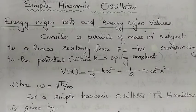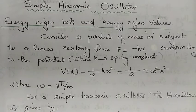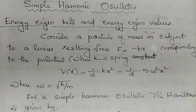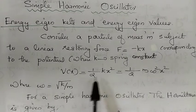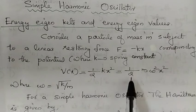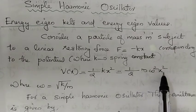Simple harmonic oscillator. It is an important topic in this chapter. In the first part we derive the energy eigenkets and the energy eigenvalues for a simple harmonic oscillator. Consider a particle of mass m subject to a linear restoring force f equal to minus kx, corresponding to the potential V of x equal to half kx squared, which is equal to half m omega squared x squared.